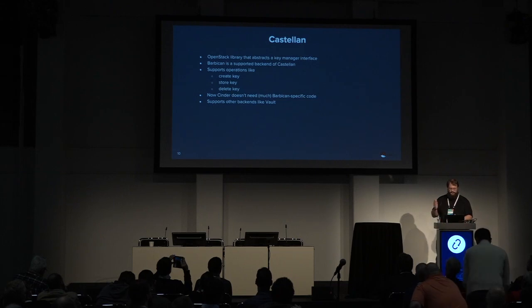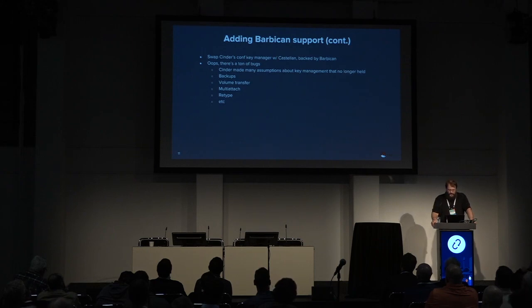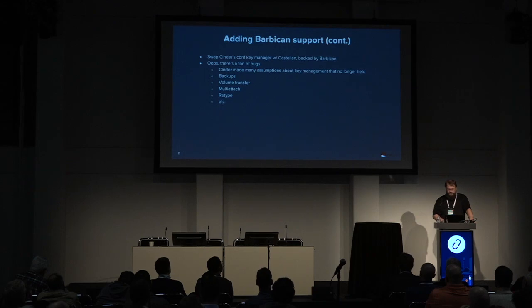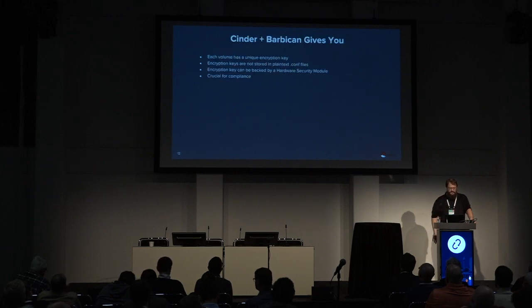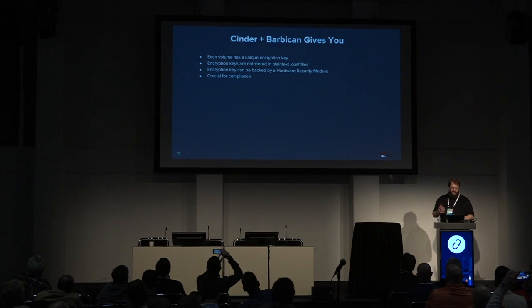Castellan is a library that supports different backends. When we did this in Cinder, a lot of things went sideways quickly because Cinder, while it had the theory of a pluggable key manager interface, made a bunch of assumptions in how keys work in backups, transferring volumes to other users, and retype. Most of this has been fixed up now. The end result is that instead of having all volumes encrypted with the same key, volumes now have unique encryption keys. Keys aren't stored in plain text in conf files — they get stored securely, and it helps meet people's actual security needs.